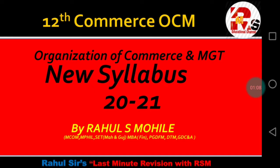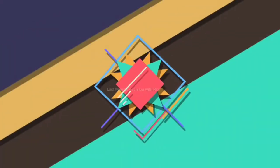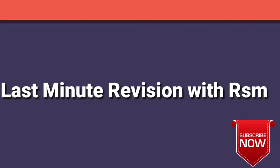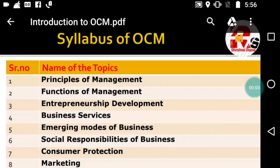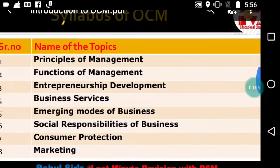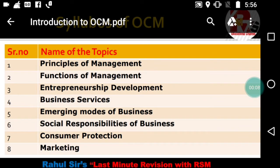If you see the syllabus of your OCM subject, we have a total of eight chapters. These eight chapters play a very vital role for scoring more in your examination. Some of the topics are quite interesting and some are a little lengthy, so we'll be discussing all the points related to each chapter.